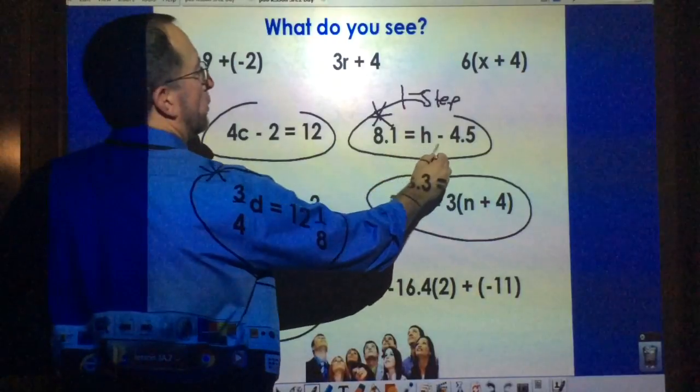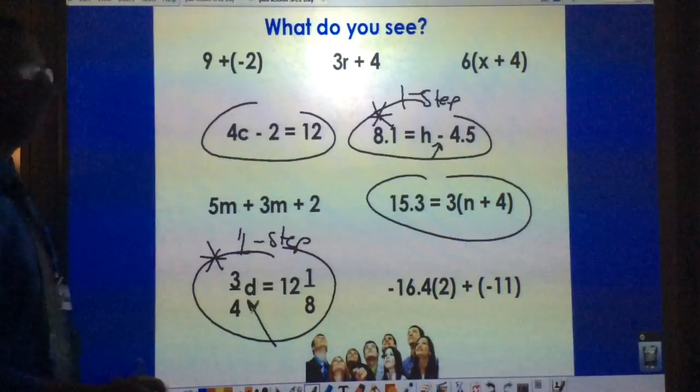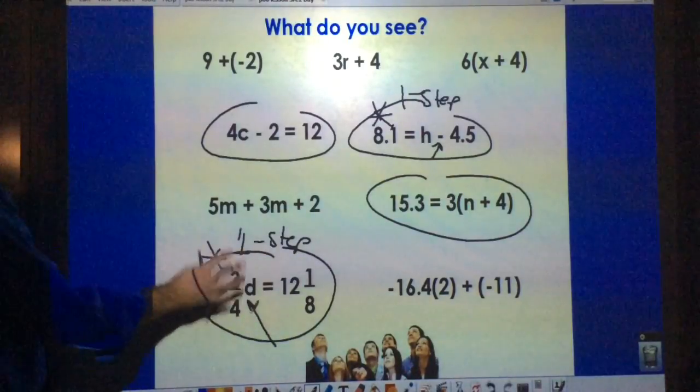This one here is a subtraction equation and this one here is a one-step multiplication equation. So this is the type of equation we're going to be looking at today.